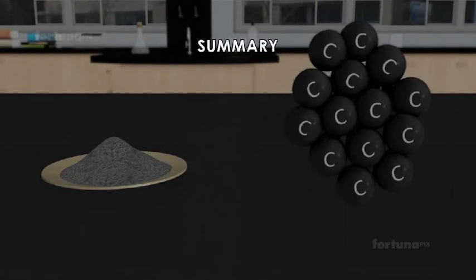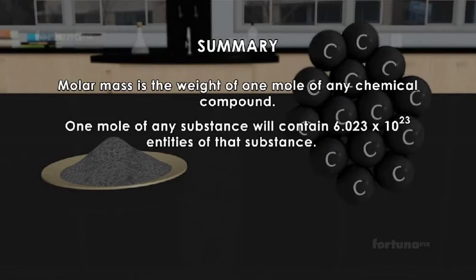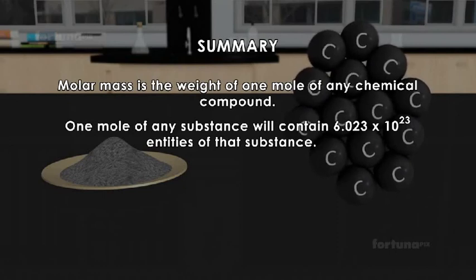Summary. Molar mass is the weight of one mole of any chemical compound. One mole of any substance will contain 6.023 × 10²³ entities of that substance.